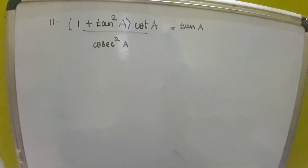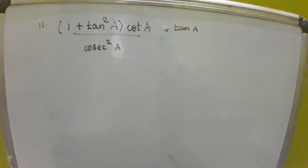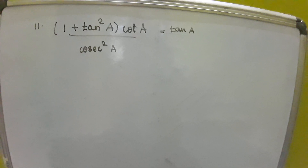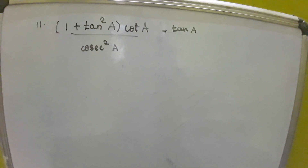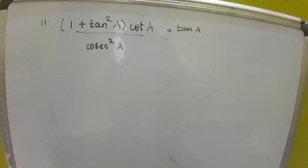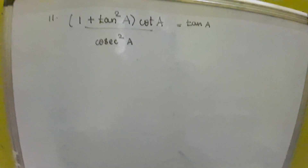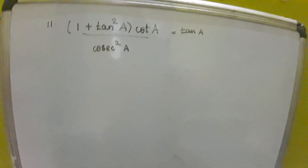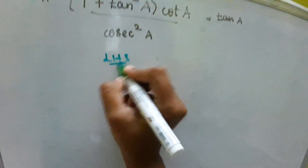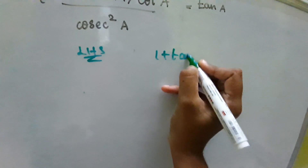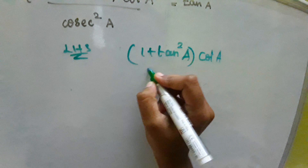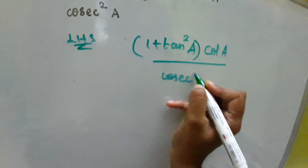We are in today's class — Class 10 Trigonometry, Exercise 12, question 21A. The problem is: 1 plus tan squared a, into cot a, divided by cosecant squared a, which is equal to tan a. We are going to take the LHS first.